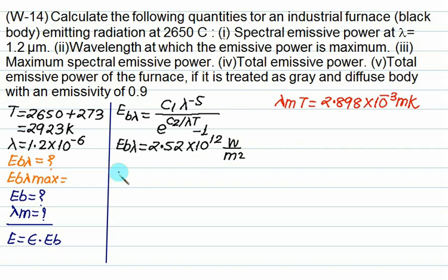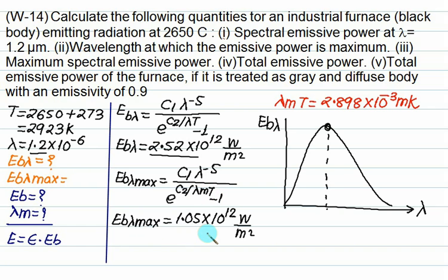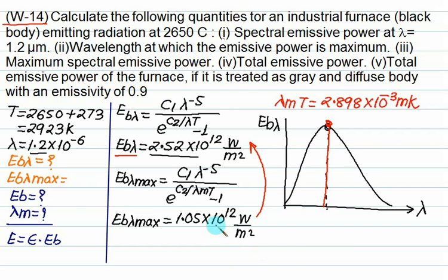Now calculate Eb_lambda_max. The only difference is replacing lambda times T with Wien's law constant 2.898 times 10 to the power minus 3. Eb_lambda_max comes out to be 1.05 times 10 to the power 12 W/m². However, the graph shows Eb_lambda_max is the maximum value, so there exists only one lambda_m. The value of Eb_lambda calculated at lambda equals 1.2 micron gives a higher value than Eb_lambda_max, which is physically not satisfying — it violates Planck's law. Therefore, this university question is entirely wrong and the data itself is invalid.